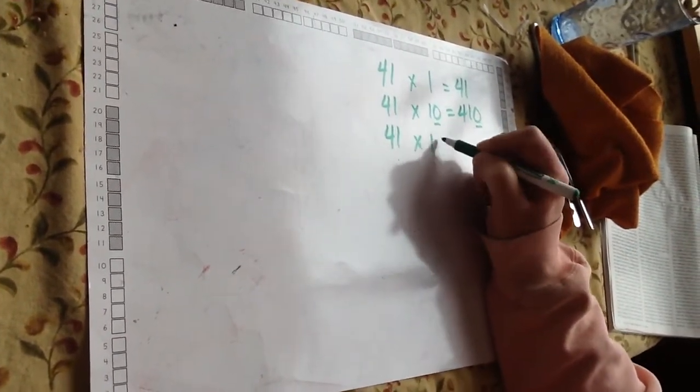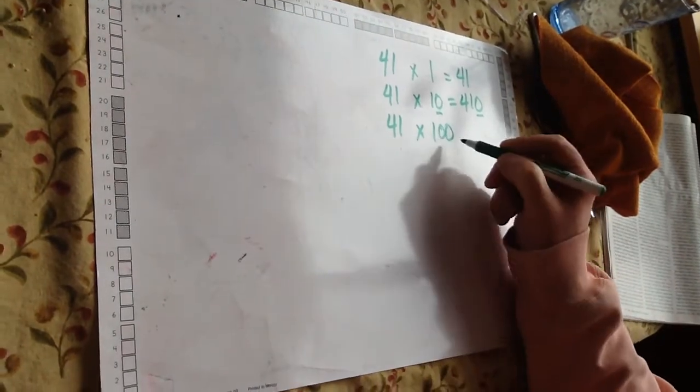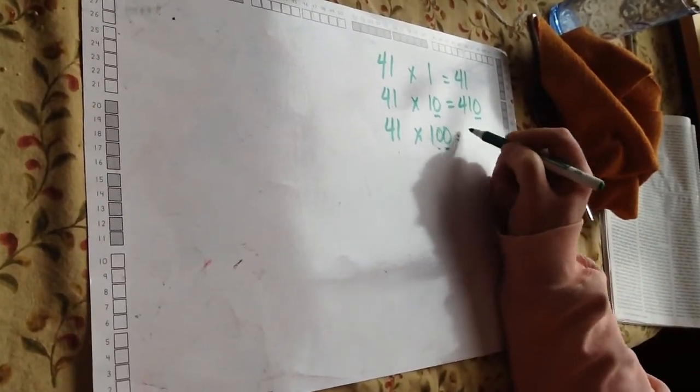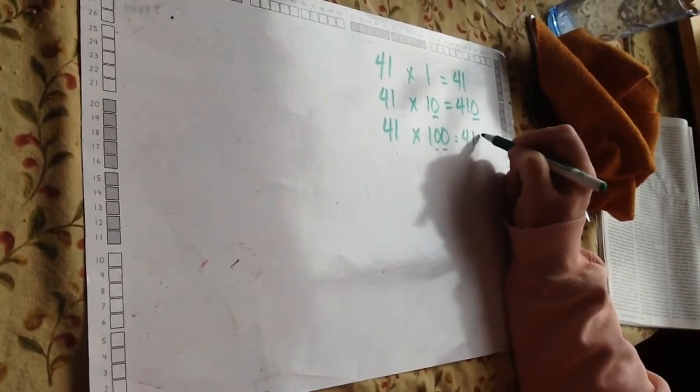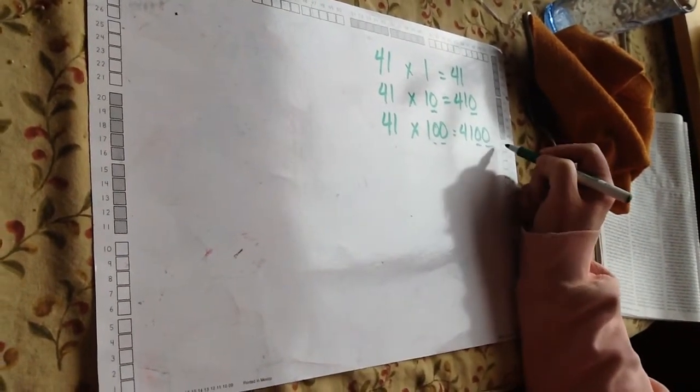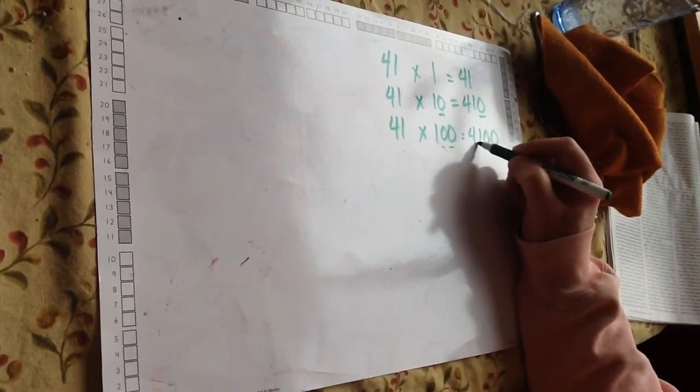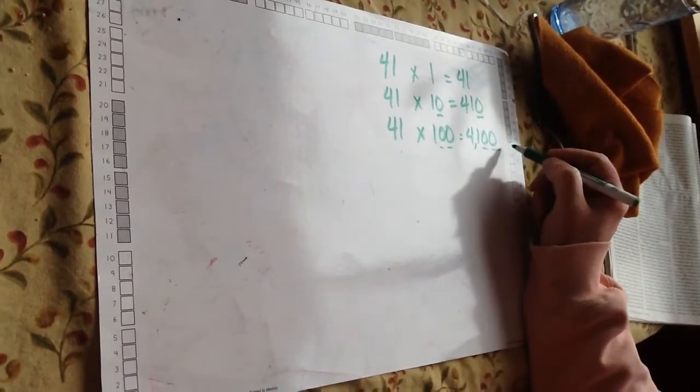41 times 100, 100 groups of 41. Well, I've got two zeros, so I'm going to have two zeros here in my answer: 4,100.